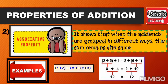So again, associative property is all about grouping. Even if you regroup the addends differently, the sum is still the same — it will not really change.